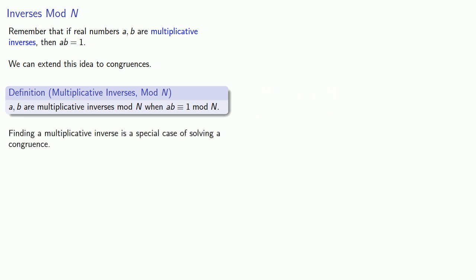Now finding a multiplicative inverse is a special case of solving a congruence. For example, let's try to find the inverse of 7 mod 26. So we need to find the multiplicative inverse of 7 mod 26, so we want to solve the congruence 7a congruent to 1 mod 26.